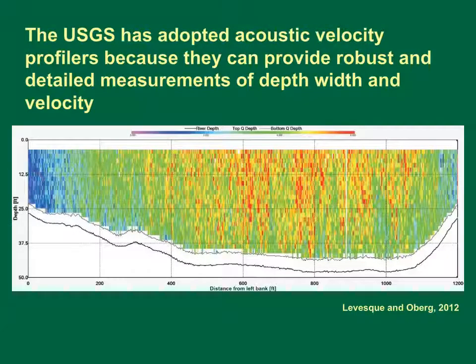The USGS has adopted acoustic velocity profilers because they can provide robust and detailed measurements of depth, width, and velocity. This graph shows distance across the stream on the horizontal axis, stream depth on the vertical axis, and flow velocity using a color ramp from purple at zero to red at six cubic feet per second. This graph indicates how the acoustic velocity profiler can provide channel geometry and velocity at the same time.